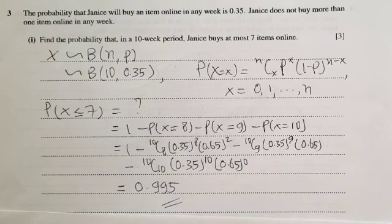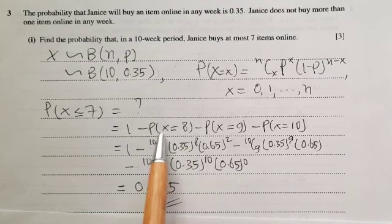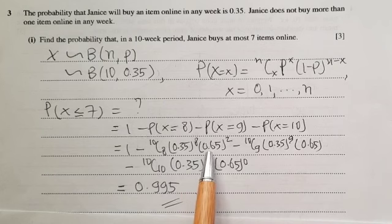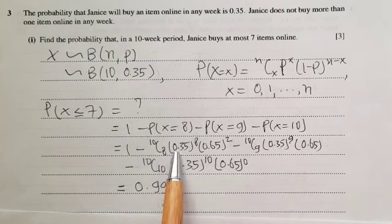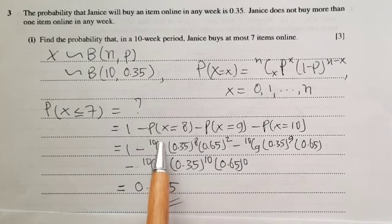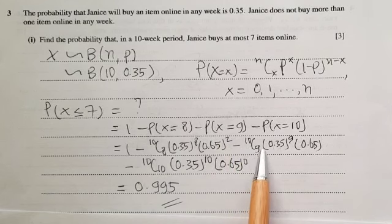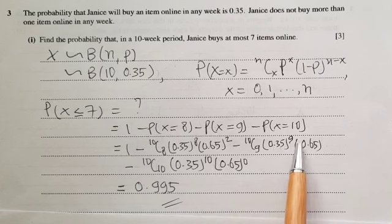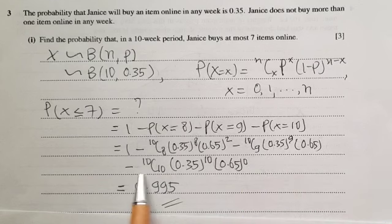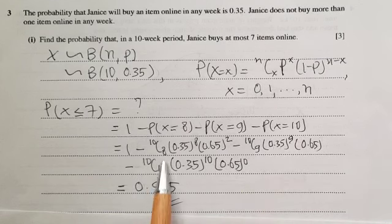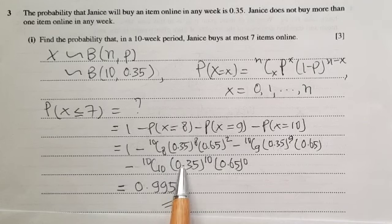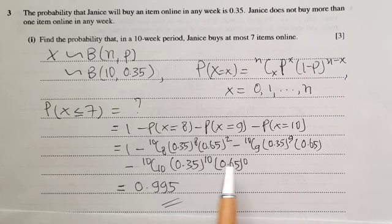P(X = 8) = 10C8 × (0.35)^8 × (0.65)^2, where 0.65 = 1 − 0.35. Then P(X = 9) = 10C9 × (0.35)^9 × (0.65)^1. And P(X = 10) = 10C10 × (0.35)^10 × (0.65)^0. Using a calculator to evaluate these terms gives the final answer.